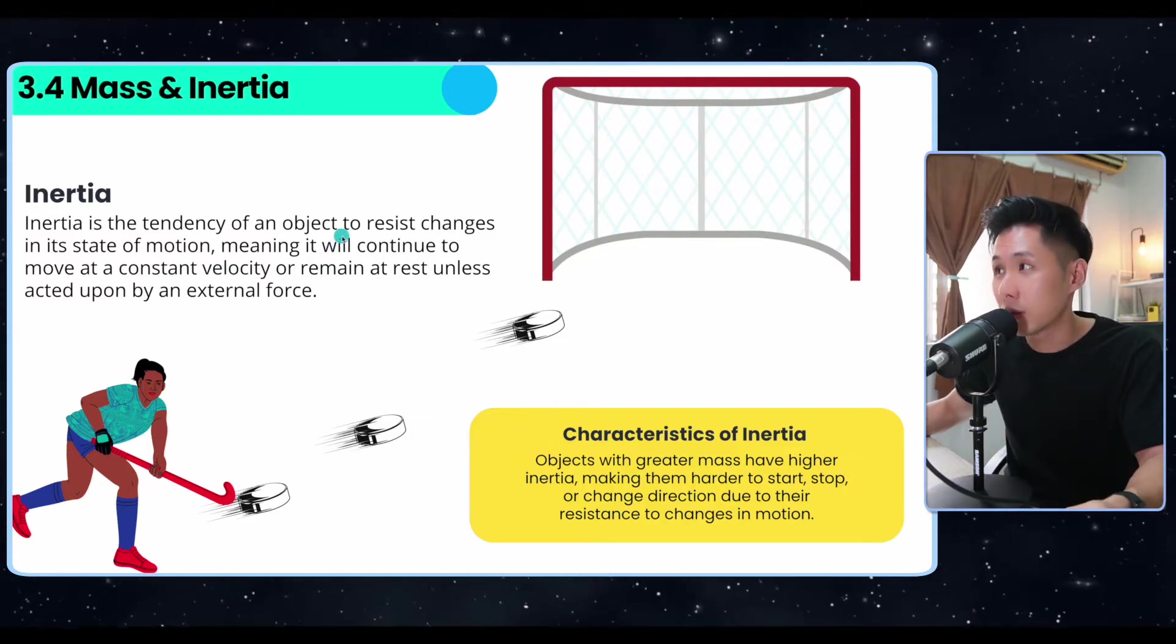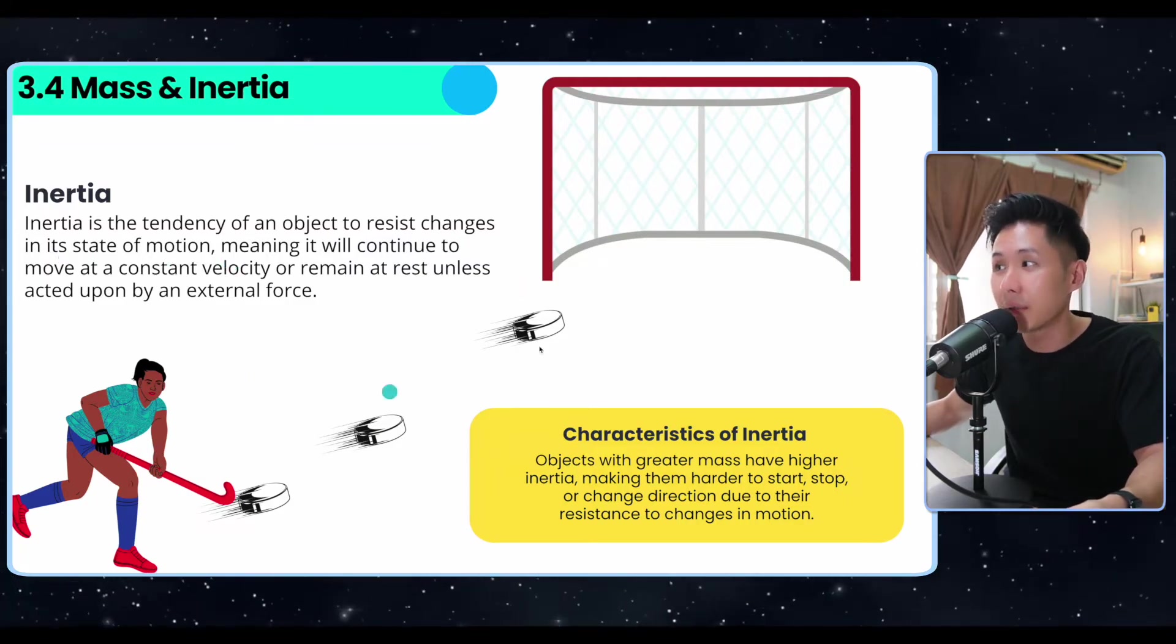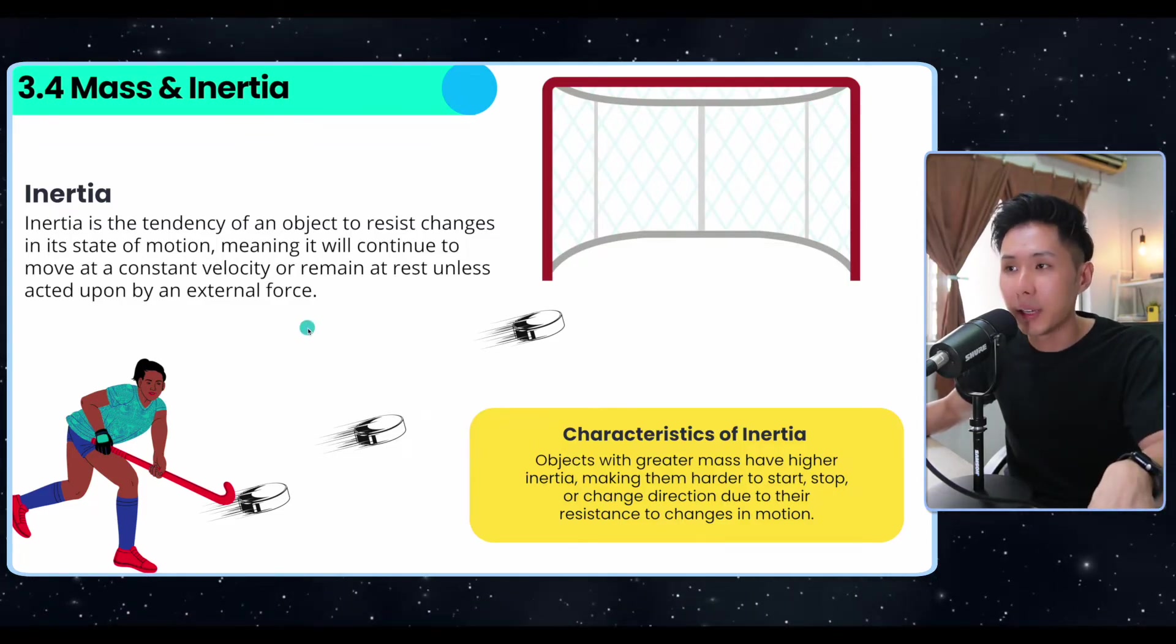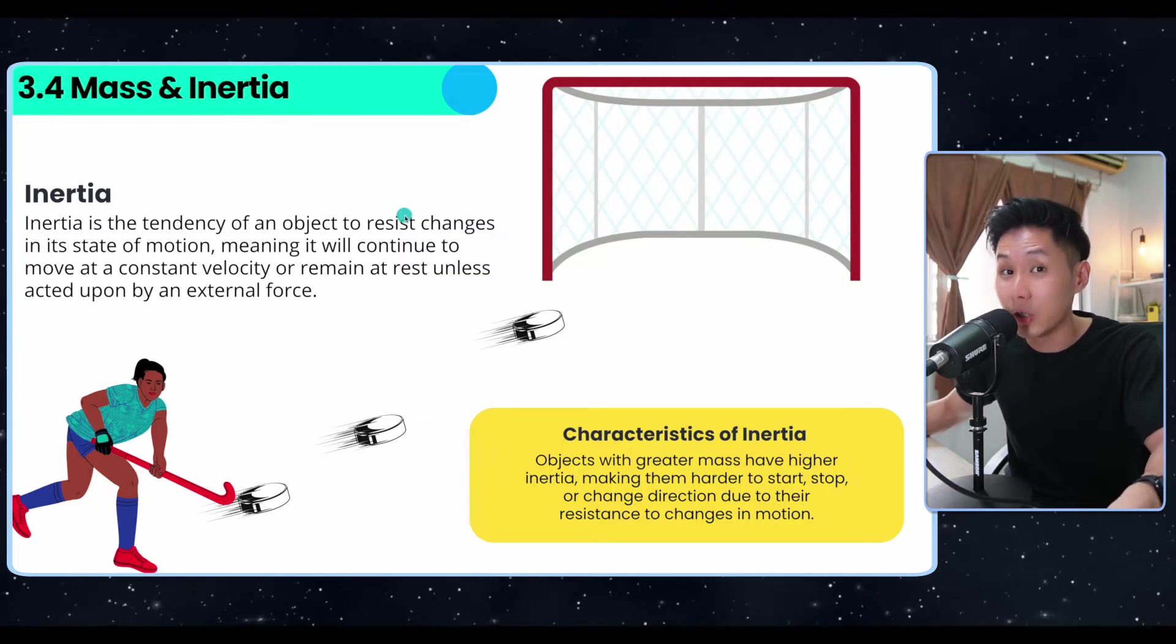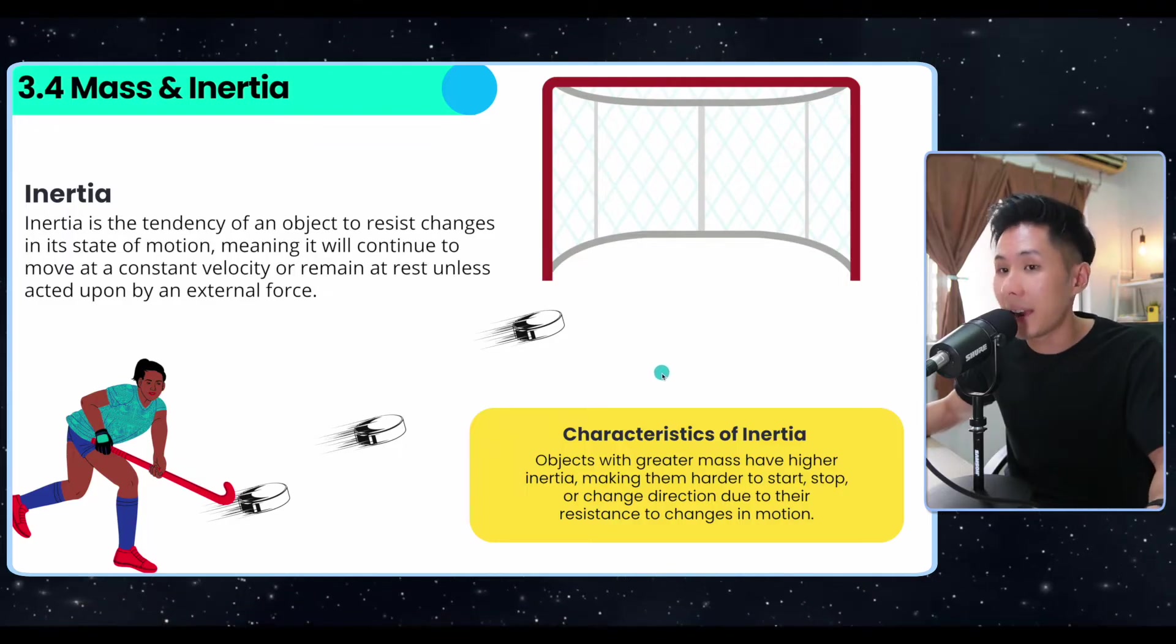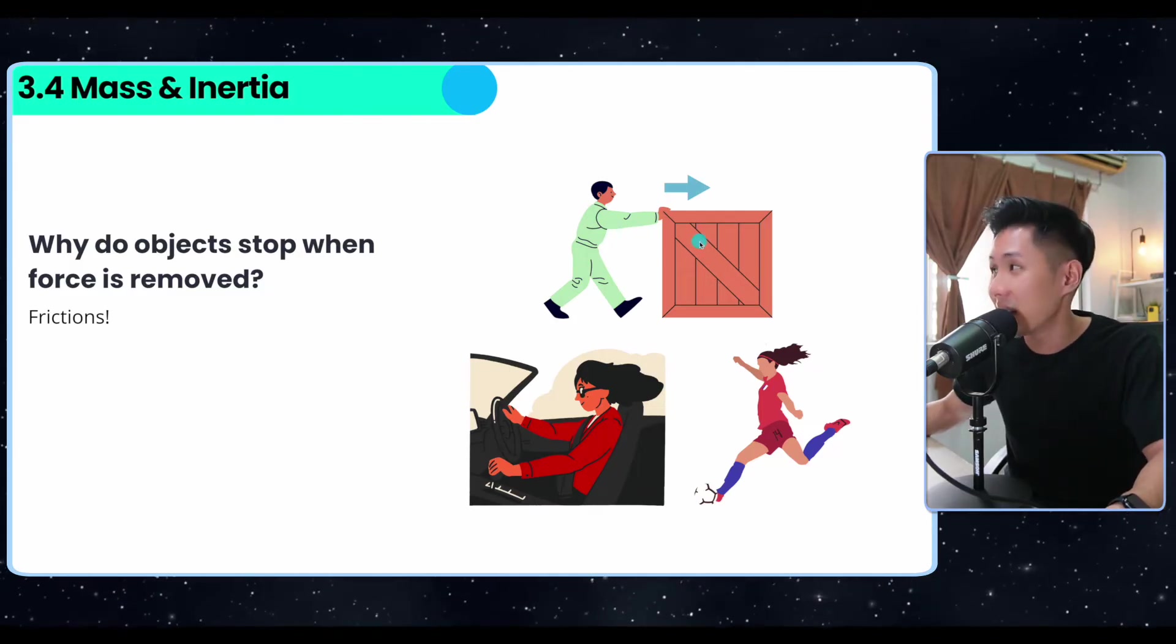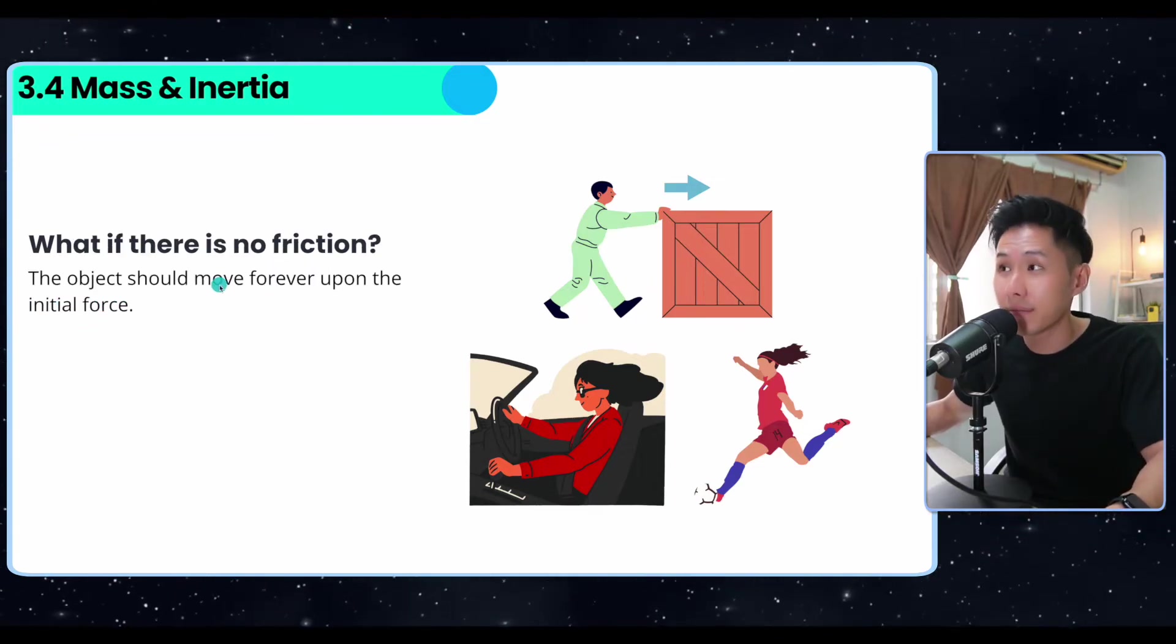Instead, we have to look into the inertia. Inertia is the tendency of an object to resist changes in its state of motion, meaning it will continue to move at a constant velocity or remain at rest unless acted upon by an external force. Why can't my hand cause the elephant to move? Because of its mass. It has a lot of inertia and as a result, it has a lot of resistance towards changes in motion. A characteristic of inertia: the heavier the object, the higher the inertia, and the harder it is for us to move them. Unless they are acted by an external force.